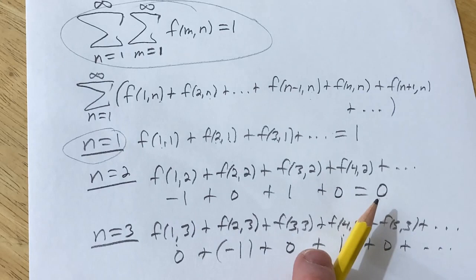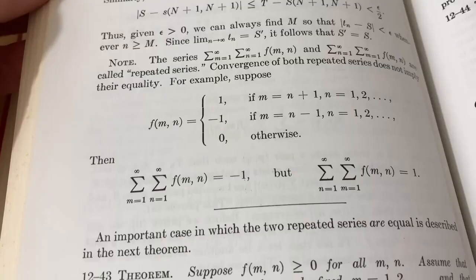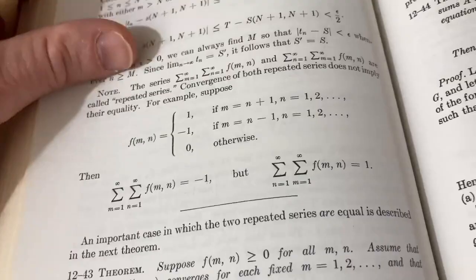So the two repeated series are not equal: one gives −1 and the other gives +1. Pretty cool and really interesting example from this book by Tom Apostol. Hopefully that made some sense. This is a really interesting book with all kinds of fun math — you can sit down with paper and pencil and work through it. It's called 'Mathematical Analysis' by Apostol; I'll try to leave a link in the description. I hope you've enjoyed this video — good luck!